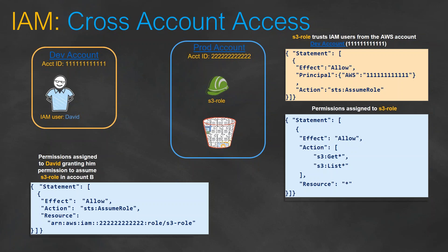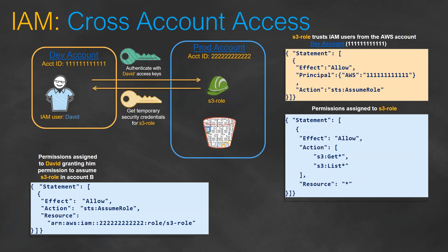Whenever David is going to request access for the S3 bucket, this is what happens in the background. David says he needs access, provides his keys, and requests to assume that role in the different account. That role is going to provide him temporary credentials, because we have set up a two-way trust relationship between the production and dev accounts specifically for the dev user.